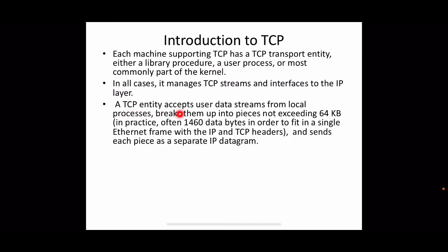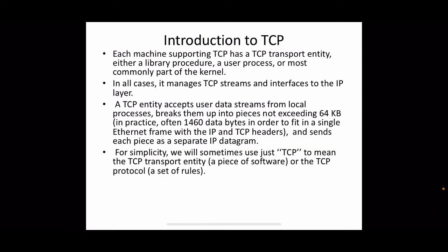The TCP entity accepts user data streams from a local application process. On the sender side, it takes data from the application, breaks it into pieces not exceeding 64 KB, and sends each piece as a separate IP datagram, attaching a header to each piece for the network layer. For simplicity, the term TCP can refer either to the TCP transport entity (the software) or the TCP protocol (the set of rules); context determines which is meant.